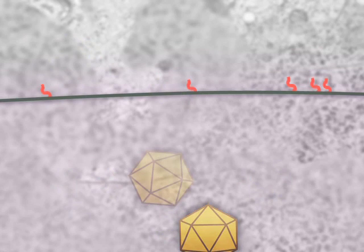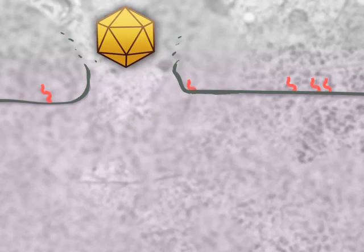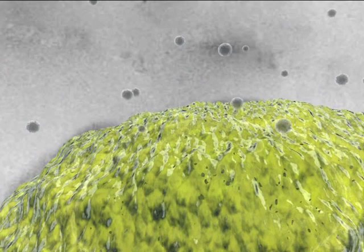Finally, the mature virions make their way to the plasma membrane and exit the cell via lysis. Now the virions are ready to infect new cells.